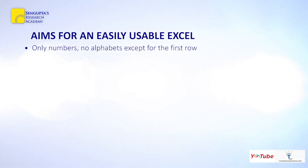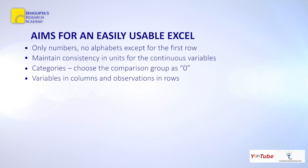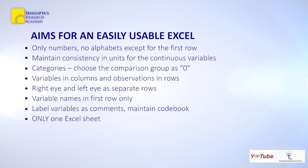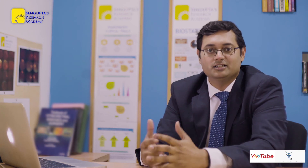In summary, the thumb rules are: only numbers, no alphabets except in the first row; maintain consistency in units for continuous variables; for categorical variables, choose the comparison group as zero; variables in columns and observations in rows; left and right eye in separate rows; variable names in the first row only; label variables as comments and maintain a code book; maintain only one Excel sheet as far as possible; only one entry per cell; avoid special features like hidden columns; and handle missing data with dots for continuous variables and an improbable number like 999 for categorical variables. Using these thumb rules, your Excel sheet will be much better and statisticians will be impressed. Thank you.